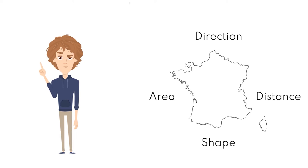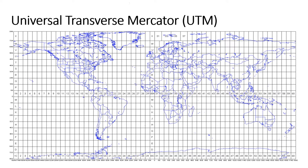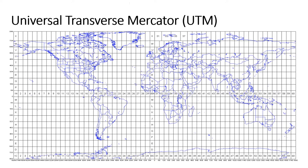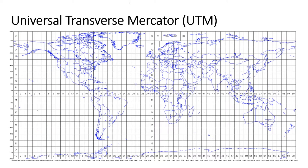No projection can preserve all of these spatial properties combined. Next, let us check the commonly used Universal Transverse Mercator coordinate reference system. The UTM system comprises 60 zones, every 6 degrees of longitude in width. The zones are numbered 1 to 60, beginning at 180 degrees longitude and increasing to the east. The zone letters are labeled from C to X. The UTM coordinate reference system is a global map projection. The x-axis is called the easting and the y-axis is called the northing.